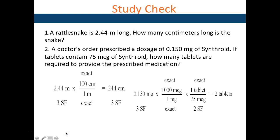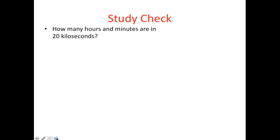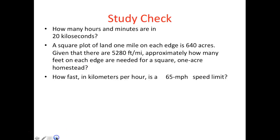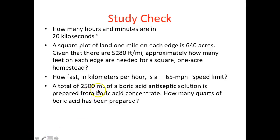Continuing with chapter 2, sections 2.5 and 2.6. We have several problems to work through: how many hours and minutes are in 20 kiloseconds; a square plot of land one mile on edge is 640 acres — how many feet on each edge are needed for a one-acre homestead; how fast in kilometers per hour is 65 miles per hour; and how many quarts is 2500 mL of boric acid antiseptic?